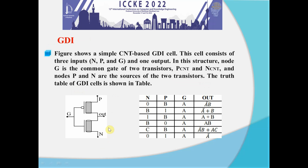The next technique is GDI. The figure shows a simple CNT-based GDI cell. This cell consists of three inputs P, G, and N, and one output. In this structure, node G is the common gate of two transistors PCNT and NCNT, and nodes P and N are the sources of the two transistors. The truth table of GDI cells is shown in the table.